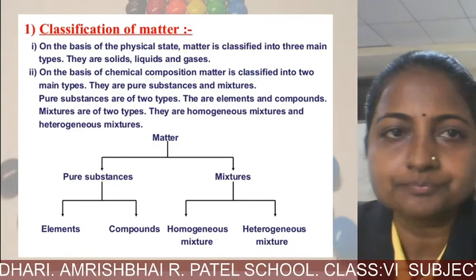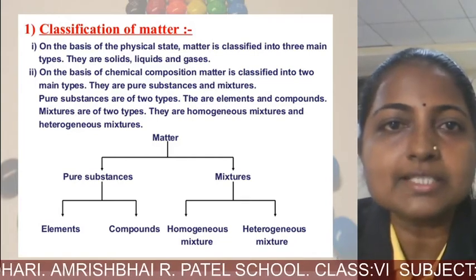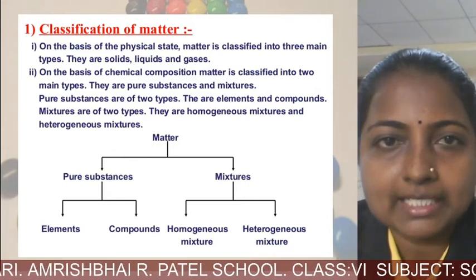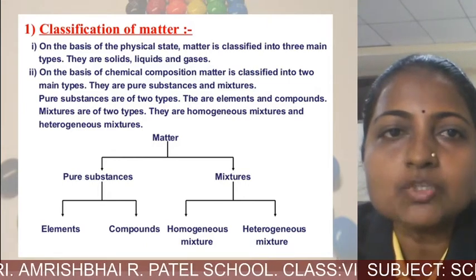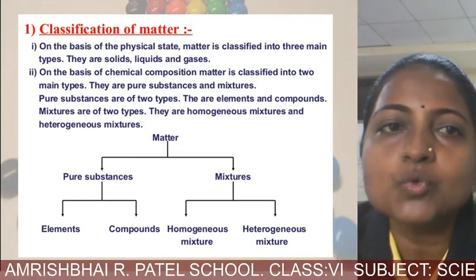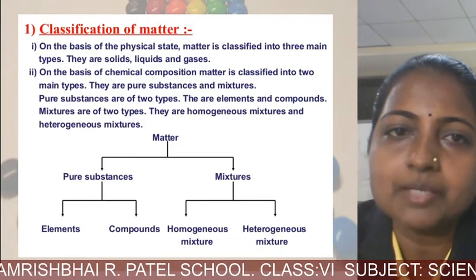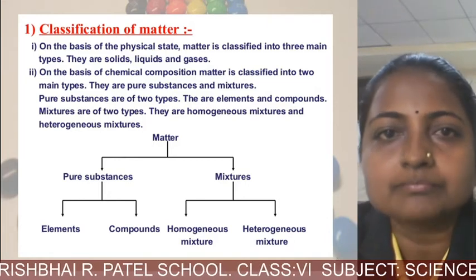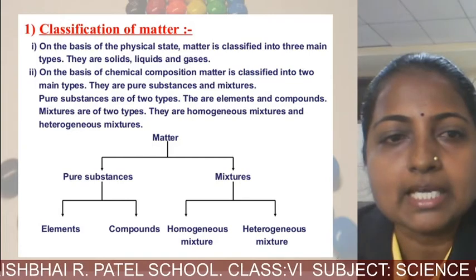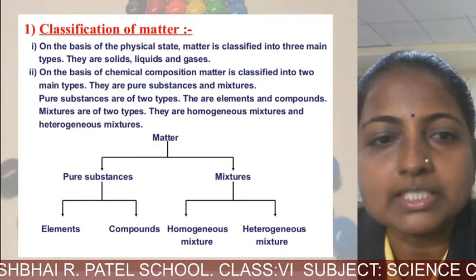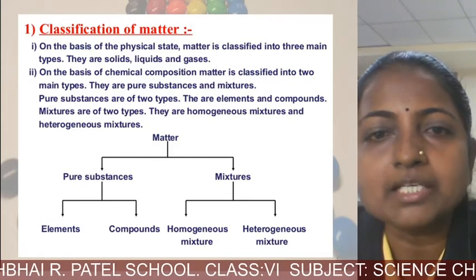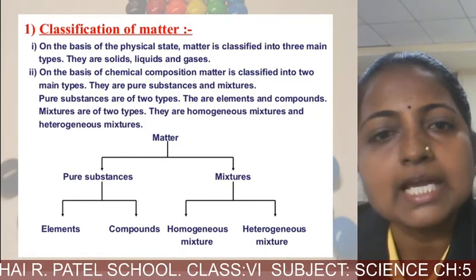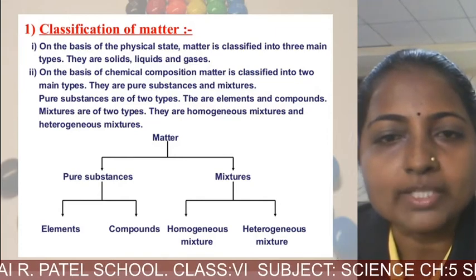On the basis of physical state, matter is classified into three main types: solids, liquids, and gases. On the basis of chemical composition, matter is classified into two main types: pure substances and mixtures. Pure substances are again of two types — elements and compounds, as you can see in the flowchart. Mixtures are also of two types: homogeneous mixtures and heterogeneous mixtures.